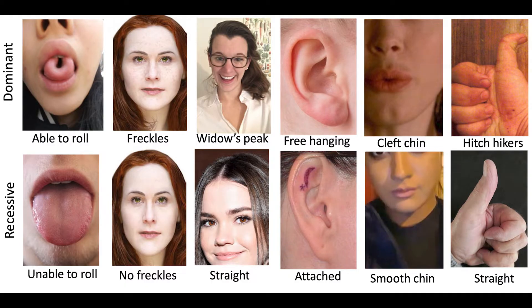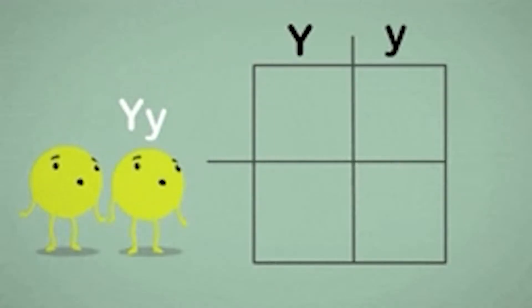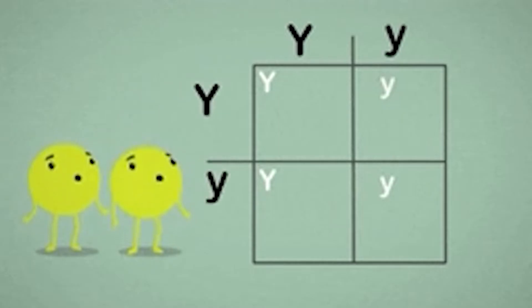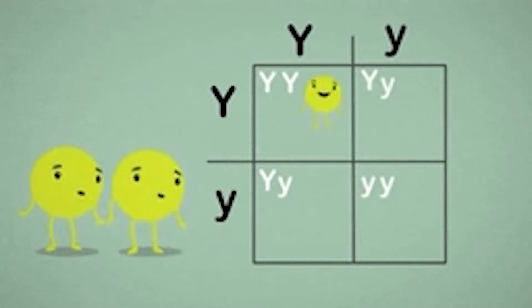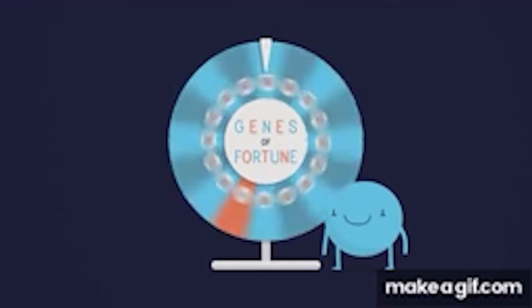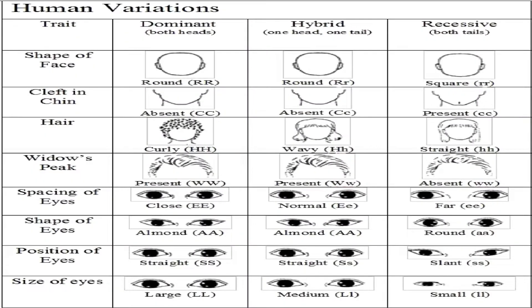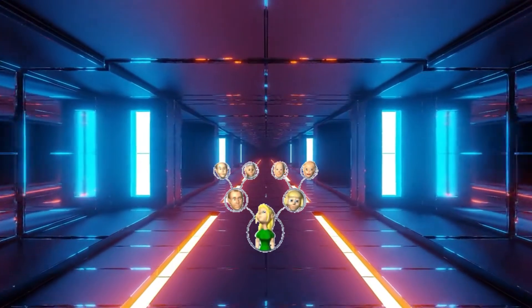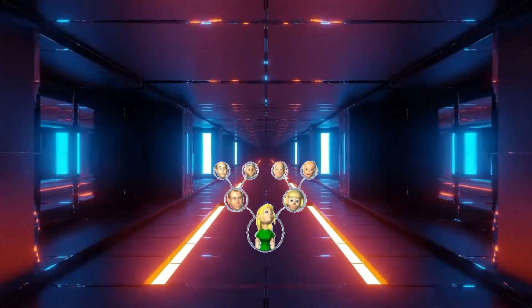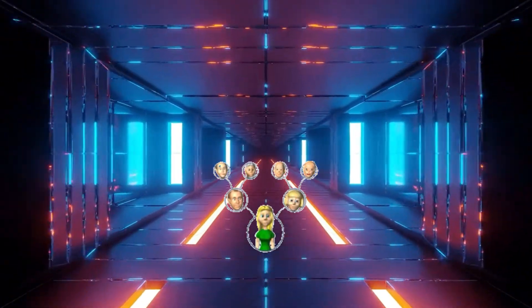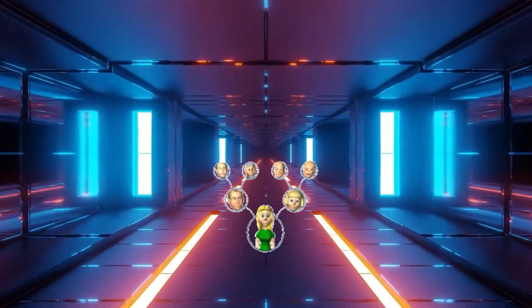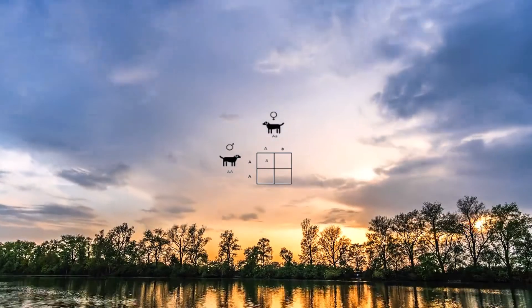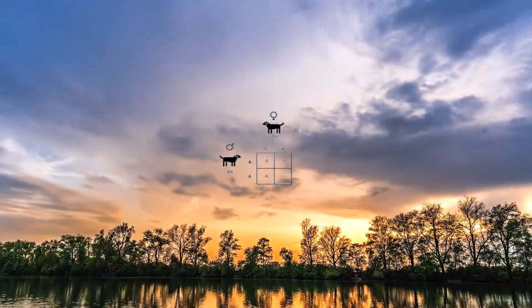Trace genes, Punnett Square. Genes come in pairs. Let me teach you about the genes and traits, how they pass on to generations — it's great.